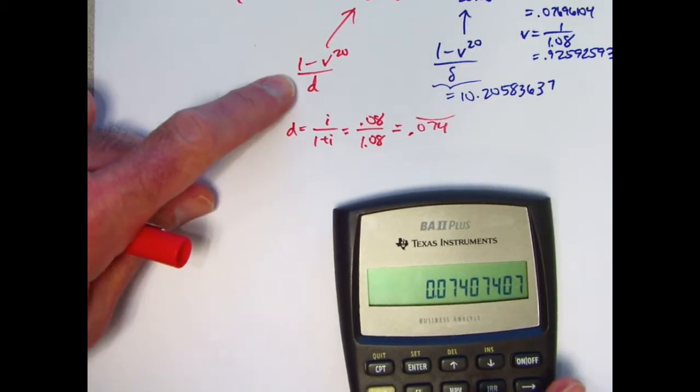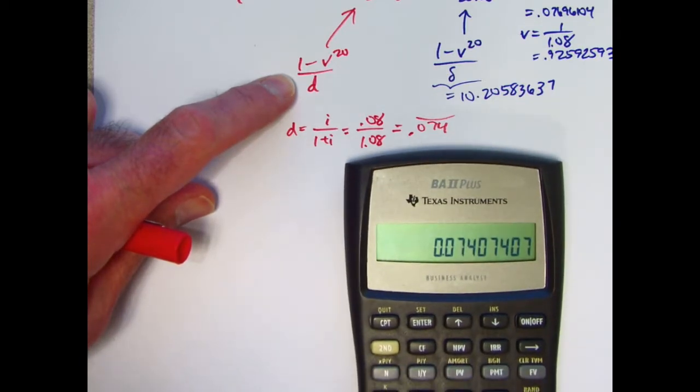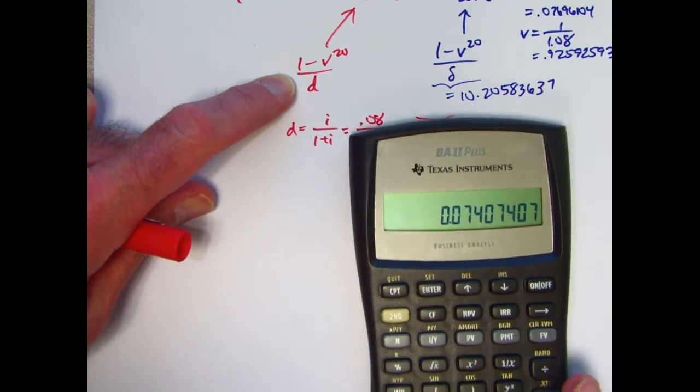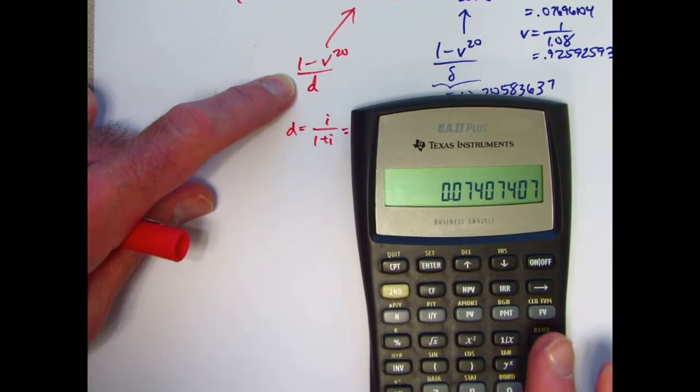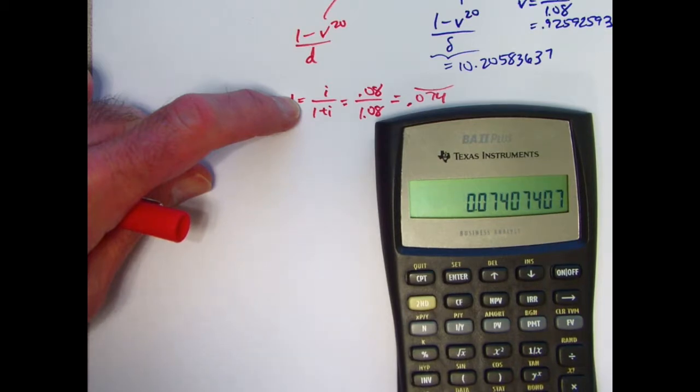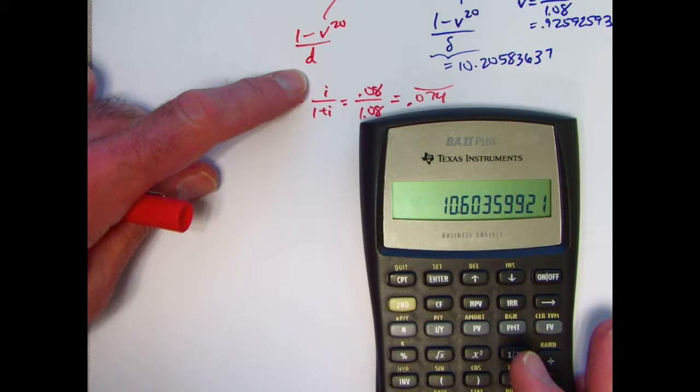All right, let's figure out then 1 minus v to the 20th divided by d. I think I won't bother storing d. I will just do v to the 20th. v is in register 1. Recall 1 to the 20th power. There it is. Subtract that from 1. Divide by d. Divide by 0.074074074. I get about 10.6036.